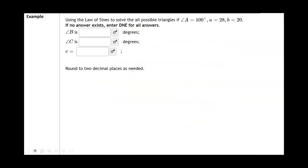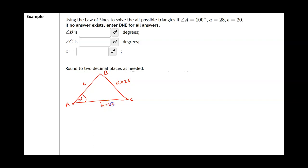Let's look at another example. Angle A is 100 degrees, a = 28, and b = 20. We need to find angle B, angle C, and the length of side c. The known ratio is any angle and its corresponding side, both of which are known. Since angle A is 100 degrees and its corresponding side is 28, the known ratio is sine of 100 degrees over 28.